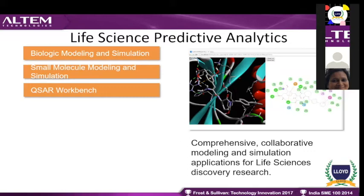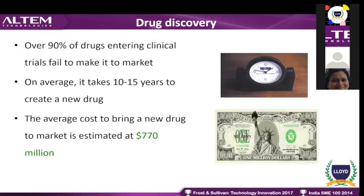Getting into the technique, we concentrate on biological modeling and simulation, small molecule modeling and simulation, and quantitative structure-activity relationship workbench. Drug discovery is not an easy process — over 90% of drugs that enter the market fail. To develop any drug for a specific target or disease averagely takes around 10 to 15 years. When a drug fails in any pre-clinical testing or clinical trial, whatever was invested in that drug discovery process is a total waste of money. For one drug to come to market, almost 170 million dollars must be invested.